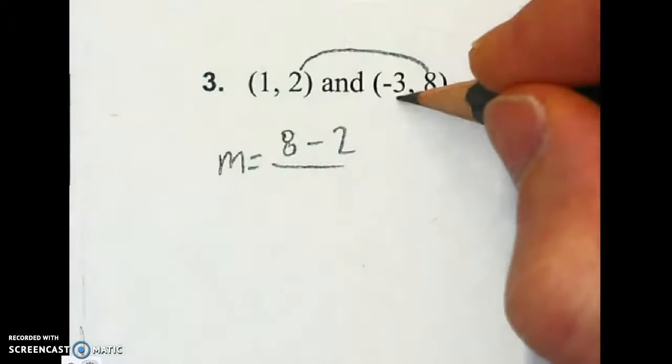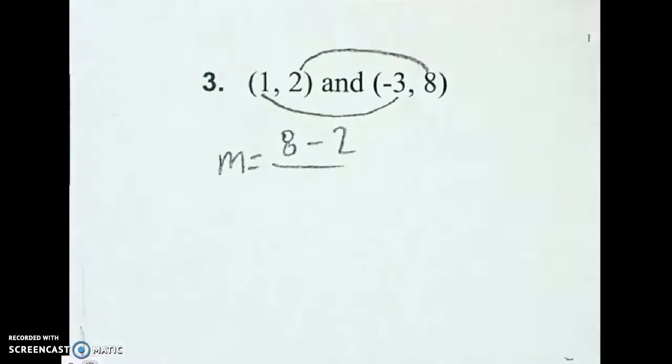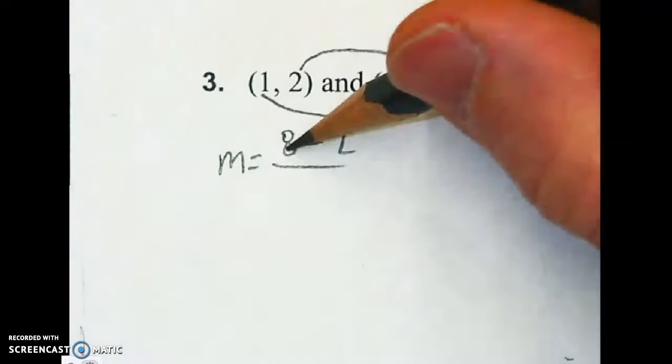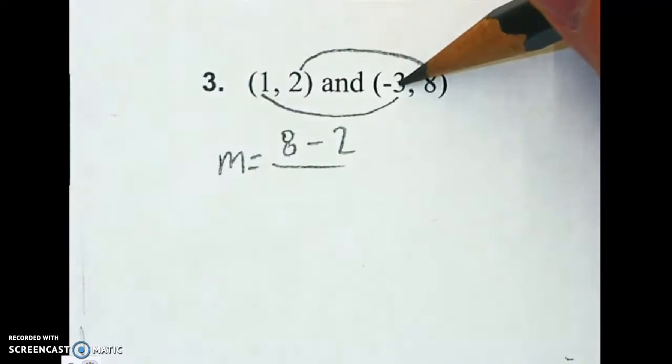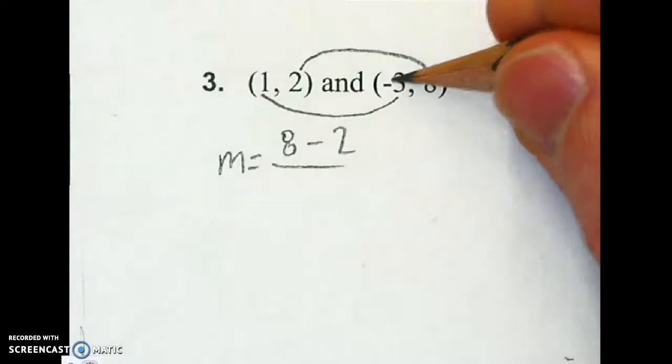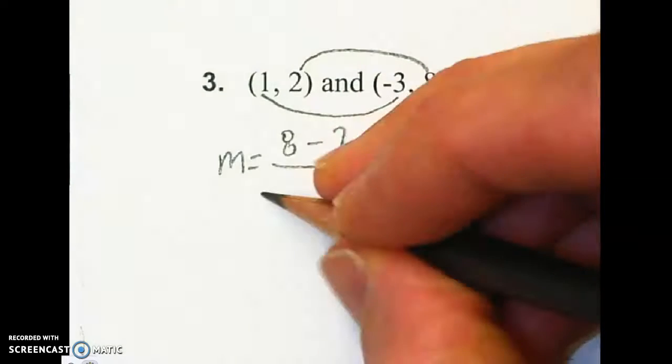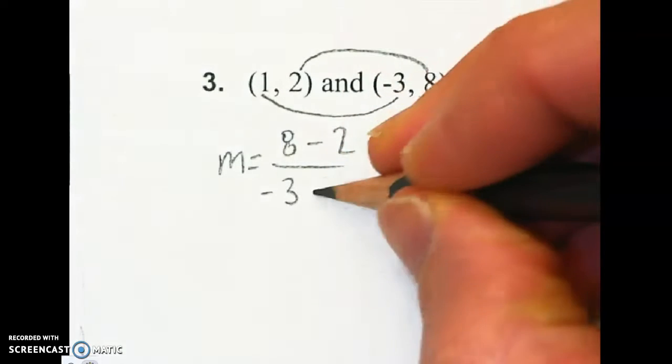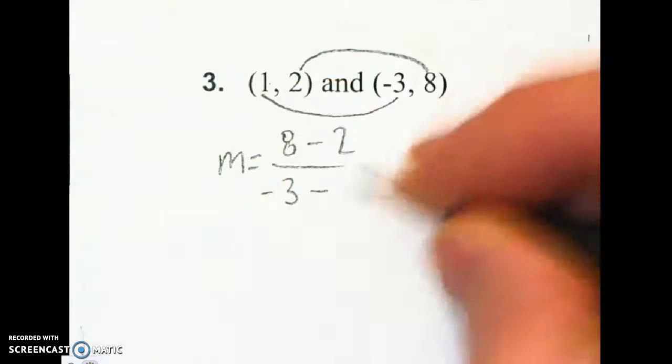On the bottom, I need to make sure I subtract in the same direction. If I use this 8 first, I need to list this negative 3 first, because they're the same point. We need to keep it the same. So now subtracting the x's on the bottom: negative 3 minus the other x, which is a 1.